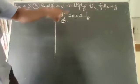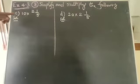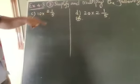Simplify and multiply the following. Question number C: 10 × 2 1/5.